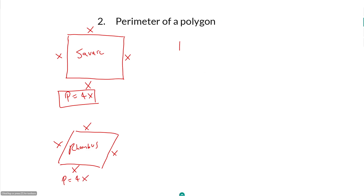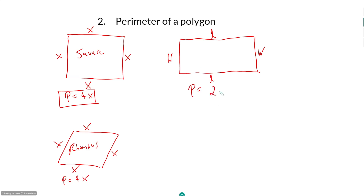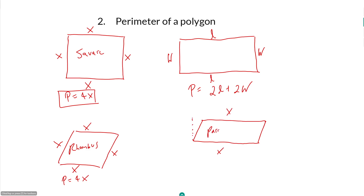For a rectangle, it has a length and a width. Since opposite sides are equal — because a rectangle is a parallelogram — the perimeter is 2L plus 2W. For a regular parallelogram that is not necessarily a rectangle, if we call one pair of sides x and the other pair y, the perimeter is 2x plus 2y. Note that the slanted side is not really the width — the width is more like the height.